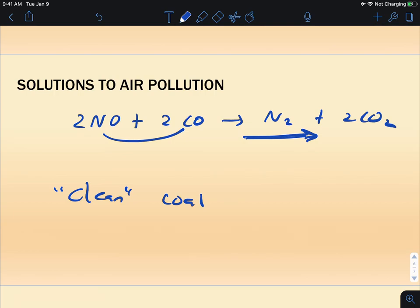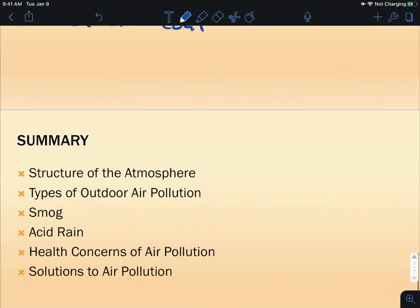And other things you can do, obviously, is develop mass transit, tax pollution that is created and things like that. So this is stuff that's covered fairly thoroughly in your chapter reading.